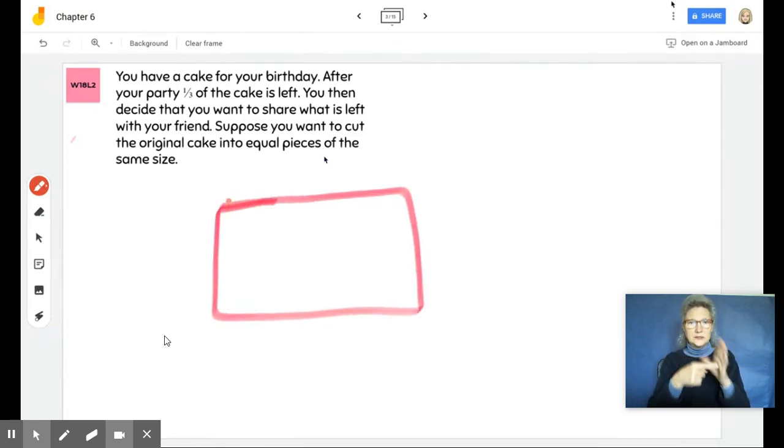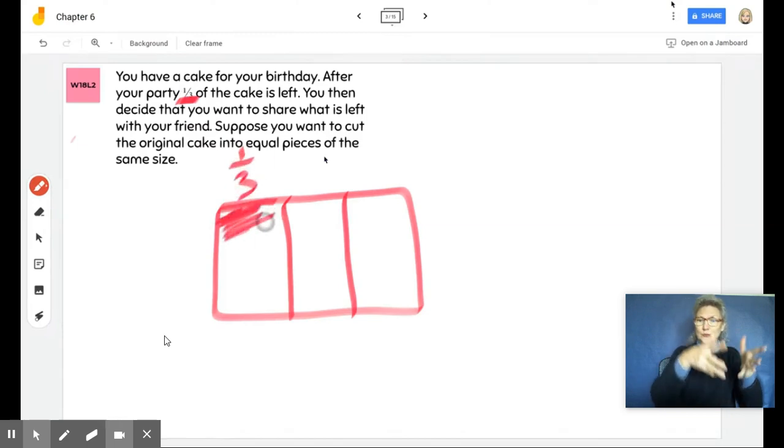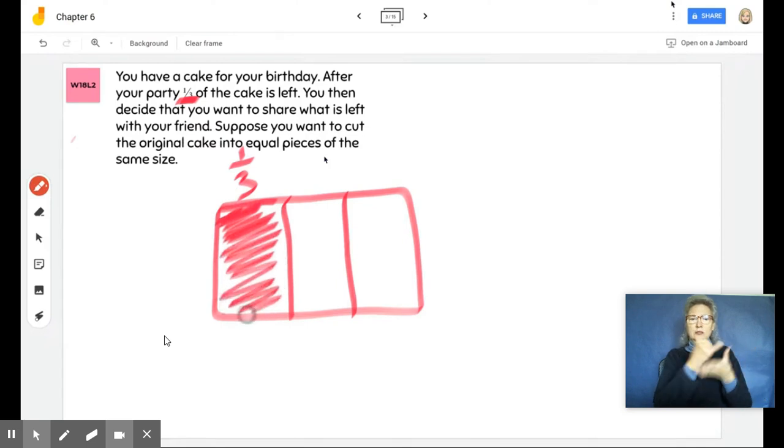This box represents my cake, and my cake is divided or partitioned initially into three equal pieces, into thirds, because the word problem itself says that one third of the cake is left. So this would essentially be one third right here. This part of my cake is what is left. I'm just going to shade in what is left.